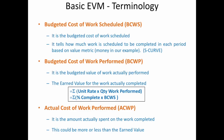Reviewing the terminology: budgeted cost of work scheduled (BCWS) tells the budgeted cost — how much work is scheduled to be completed in each period based on the value metric, which is money in our example. This is represented as the S curve.